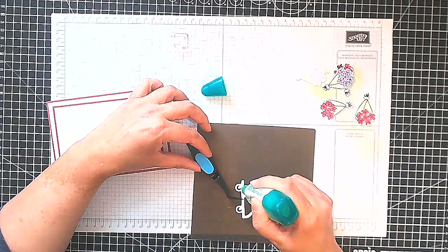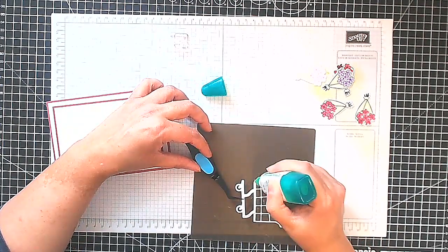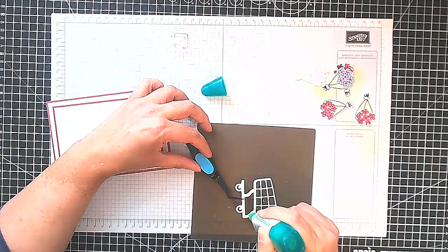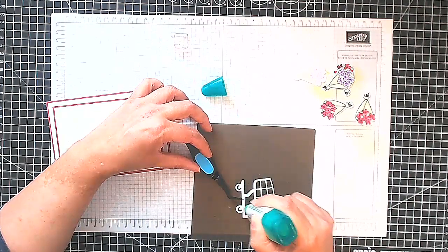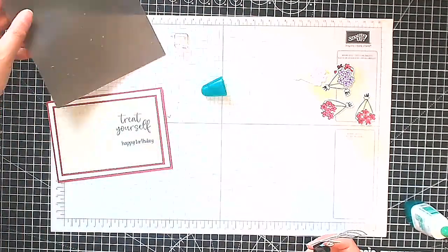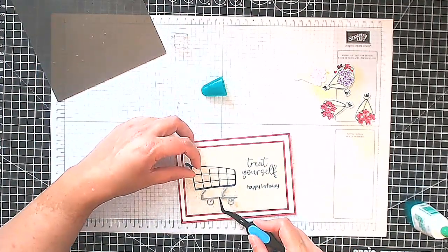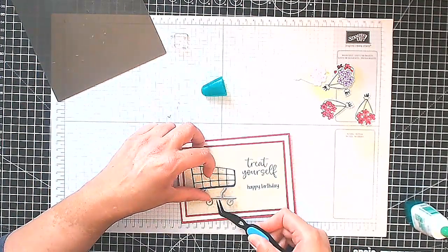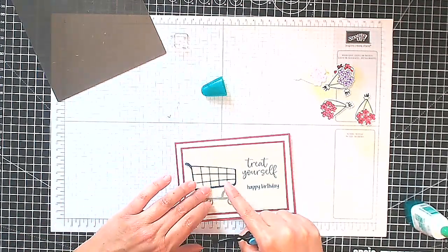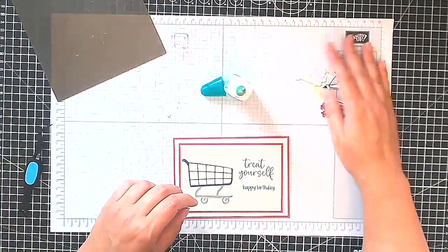You can see here I'm just going to put a bit of glue just along the bottom where the wheels are and along the bottom of the trolley but not along the top of the trolley because I want to be able to tuck my bunches of flowers into the trolley. Let's put that down on our card right about there.